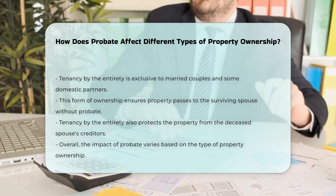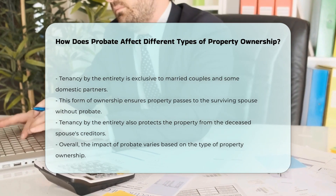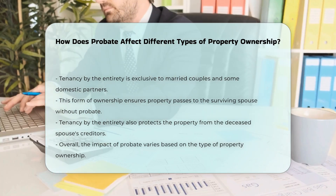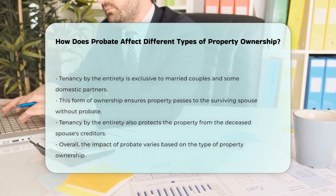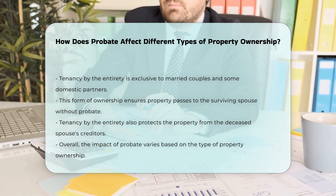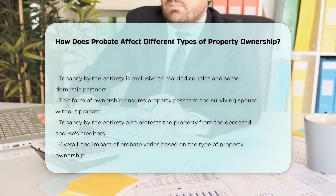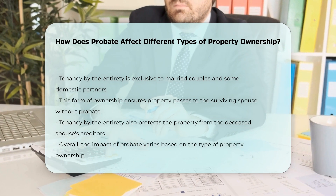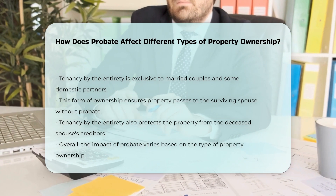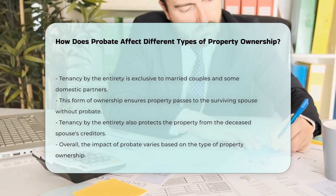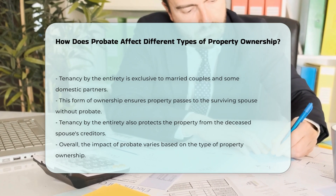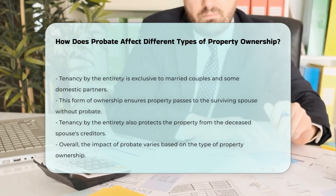In summary, the impact of probate varies significantly depending on the type of property ownership. Sole ownership and tenancy in common typically require probate upon the death of an owner, while joint tenancy and tenancy by the Entirety allow for automatic transfer of property without probate. Trust ownership also provides a mechanism to avoid probate.